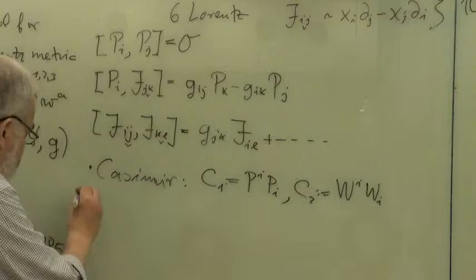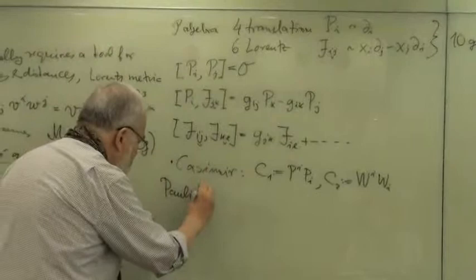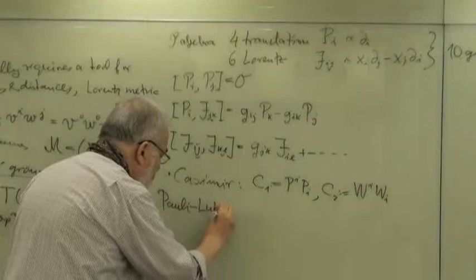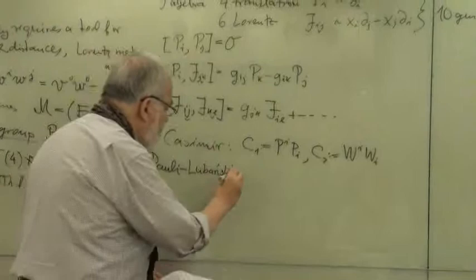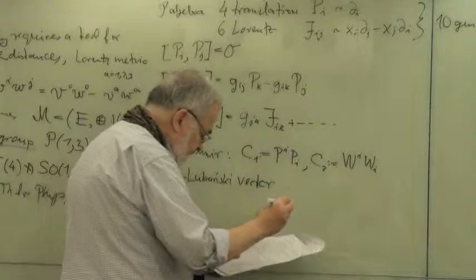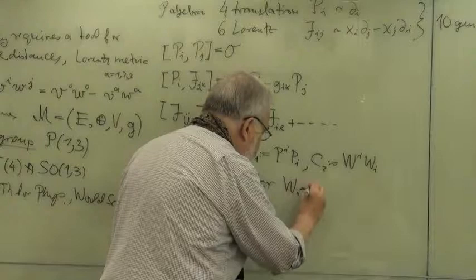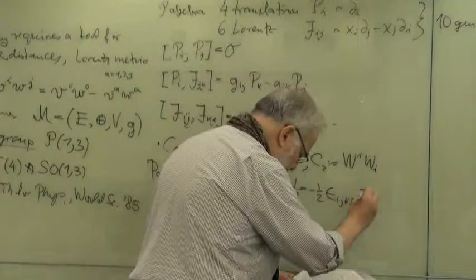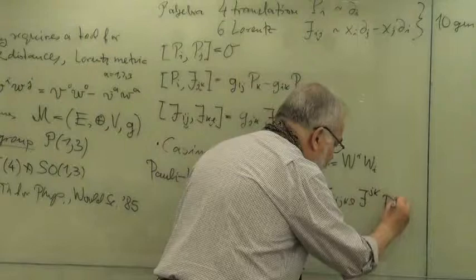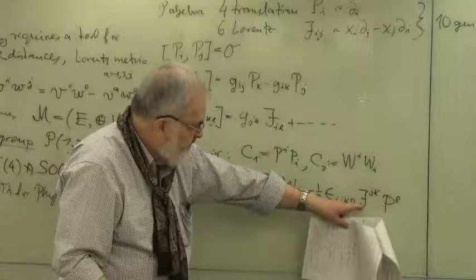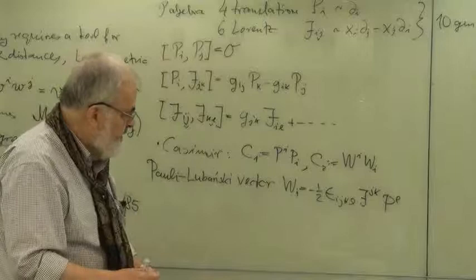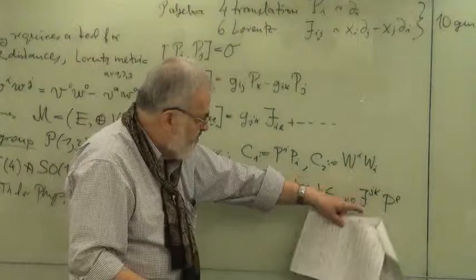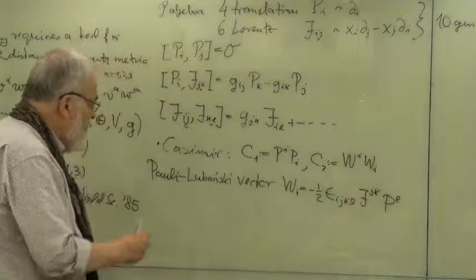And the second Casimir, well, second we say W, Wi times Wi. Summation over i is understood. Now I have to tell you what is W. W is the so-called Pauli-Lubanski vector. Pauli should be a household name for any physicist. Lubanski is Polish. The Pauli-Lubanski vector, it's basically a sort of angular momentum. Wi equals minus one half times the Levi-Civita symbol epsilon ijkl times Jjk times Pl.